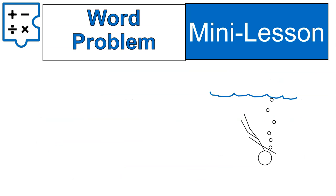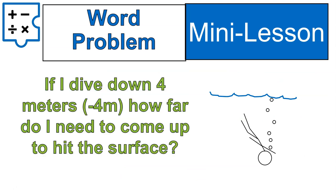Let's do one more word problem that has to do with swimming. If I dive down 4 meters — I'll call that negative 4 m for meters — how far do I need to come up before I get back to the surface? To write it as an equation: negative 4 plus 4 is equal to zero. I could have said negative 4 plus N is equal to zero, and N is equal to 4. But here I just wrote it as adding opposites.